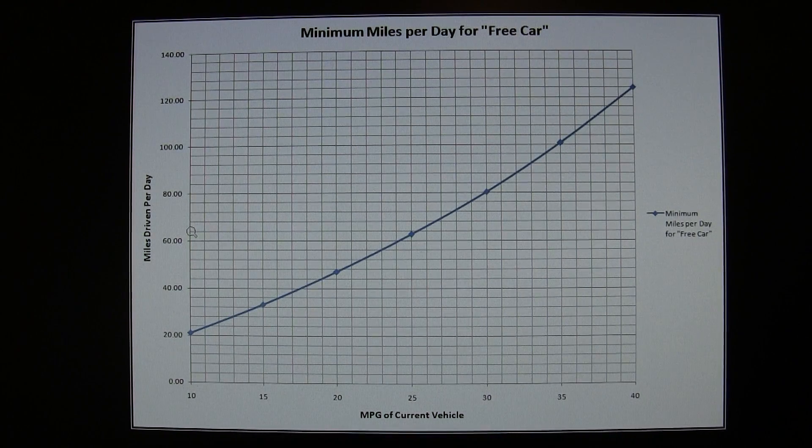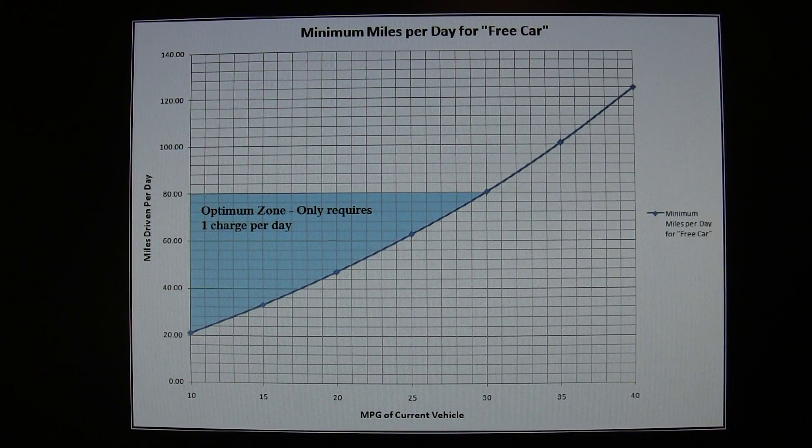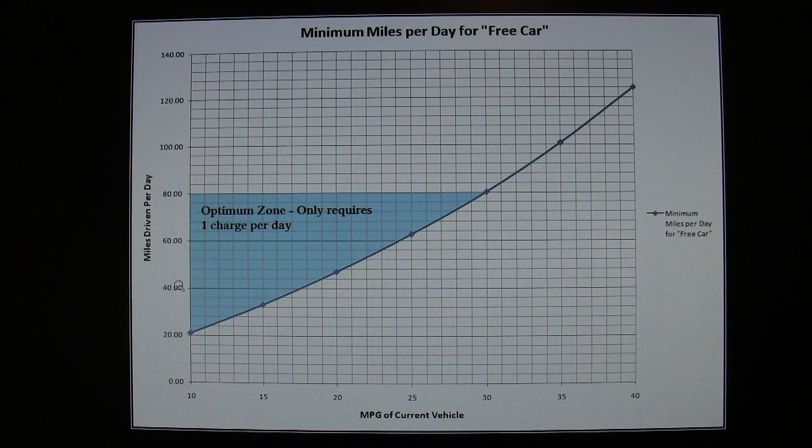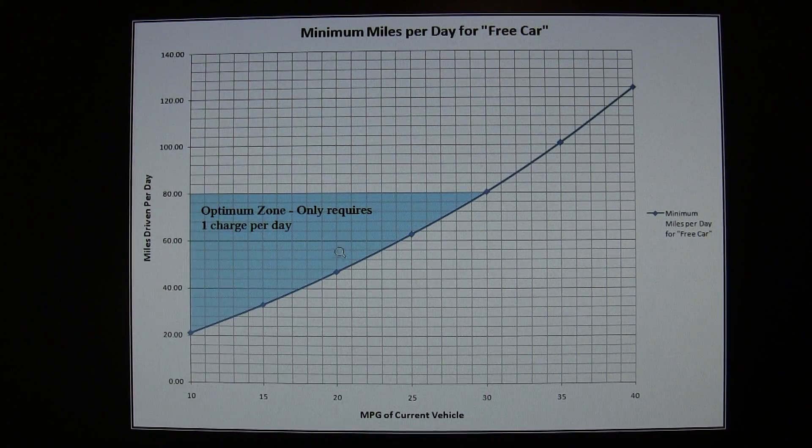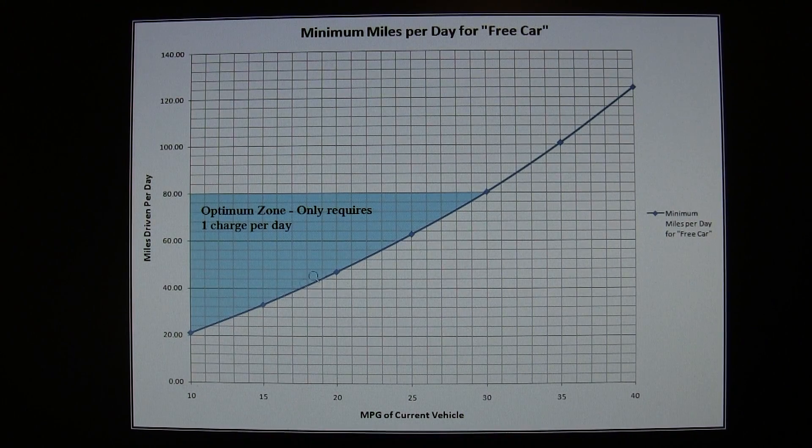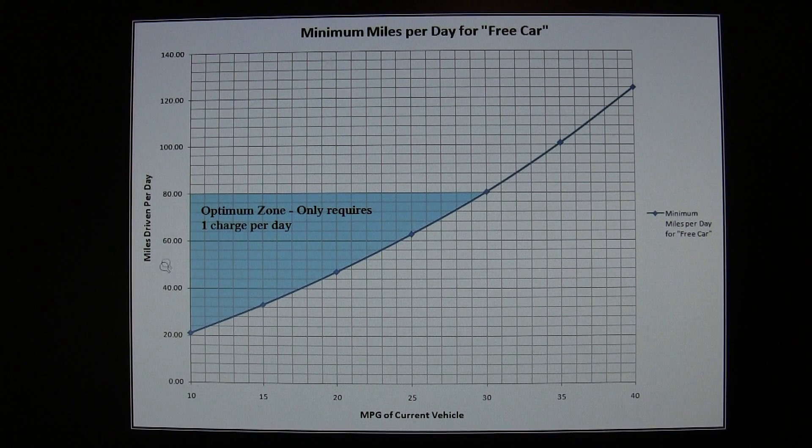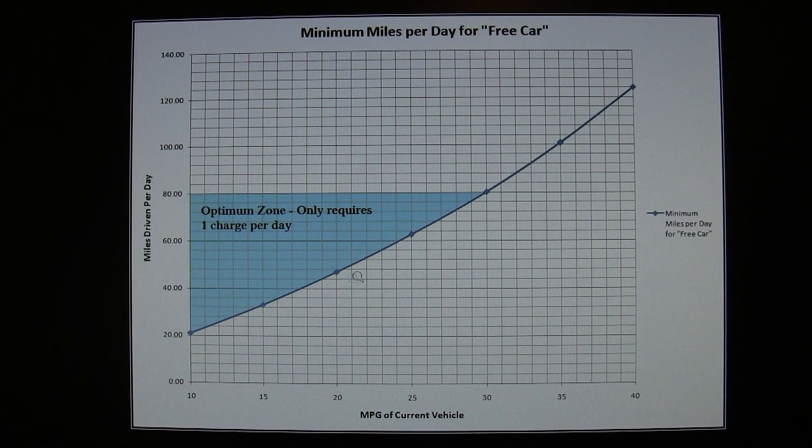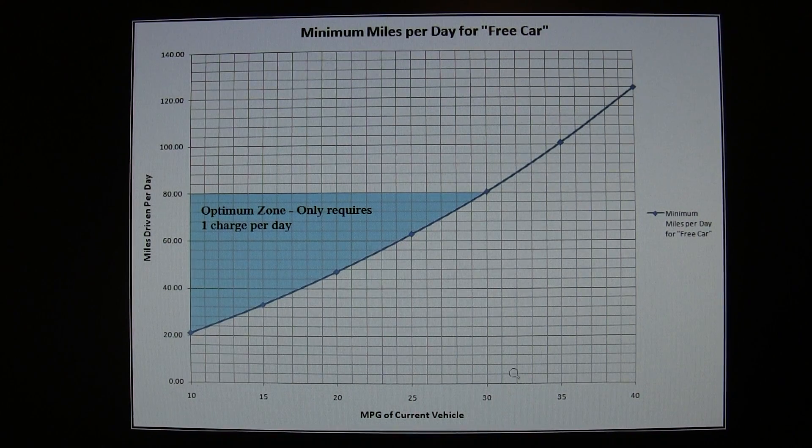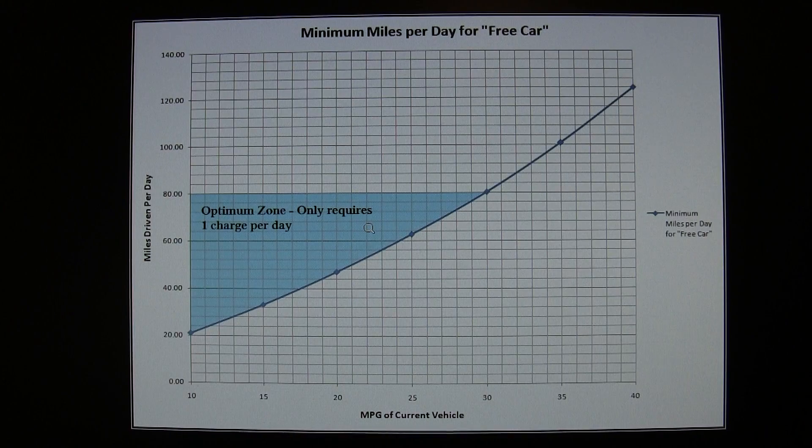Of course, the Leaf doesn't have an unlimited range. It's about 75 to 80 miles. Here, this is basically the optimum zone, where you would only have to charge the car once per day, and you would still be getting the car for free, if you fall in this category of less than 30 miles per gallon, and your miles per day are greater than this curve right here. So you guys can check out this graph, kind of point out where your car is, and figure out if it's actually something that could be feasible for you to do.